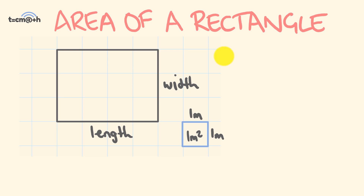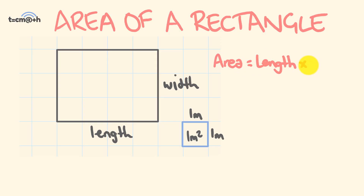So how do you go about working out the area of a rectangle? The formula is pretty simple: the area of a rectangle is equal to the length multiplied by the width — length times width.